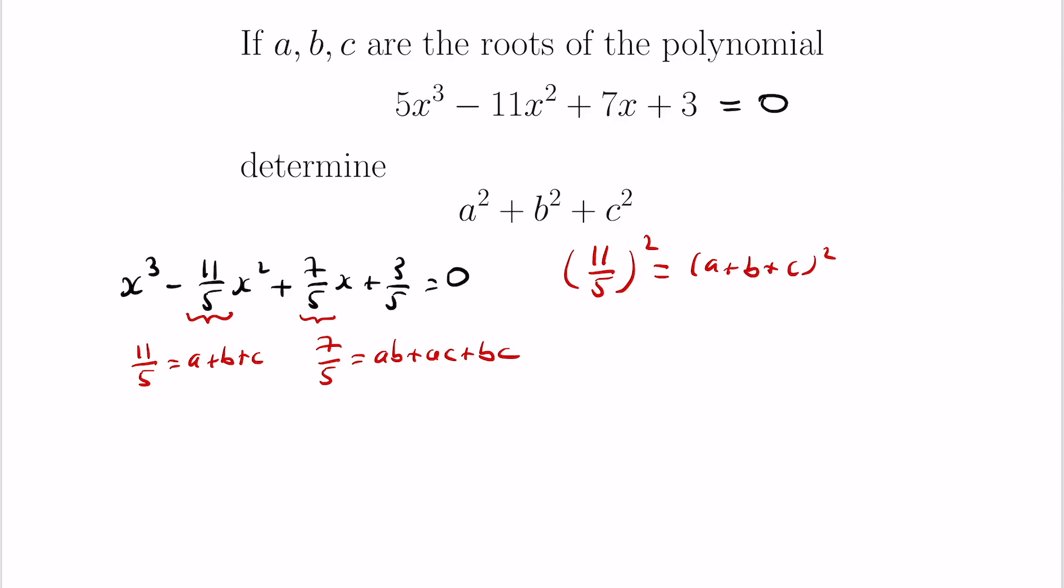Now we can expand this product by thinking about it as two copies of the trinomial a plus b plus c. Now when we expand this we pick a term from here and a term from here and add all possibilities of doing so up. First we notice we have terms like this when we pair a and a and b and b and c and c. And that gives us a squared plus b squared plus c squared.